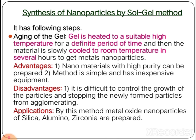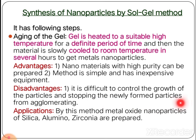Let us discuss the advantages of the sol-gel method. First, nano metals with high purity can be prepared. Second, this method is very simple and uses inexpensive equipment. There are also disadvantages: it is difficult to control the growth of the nanoparticles, and stopping newly formed particles from agglomerating — that is, intermixing — is also a challenge.